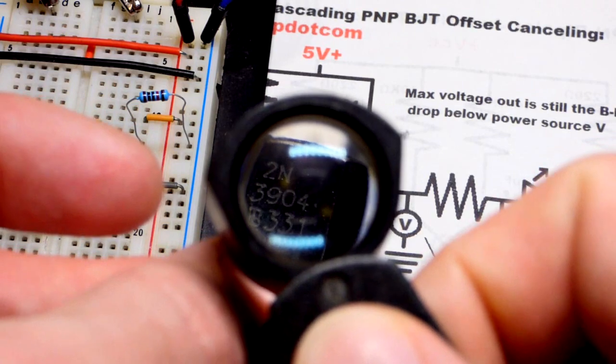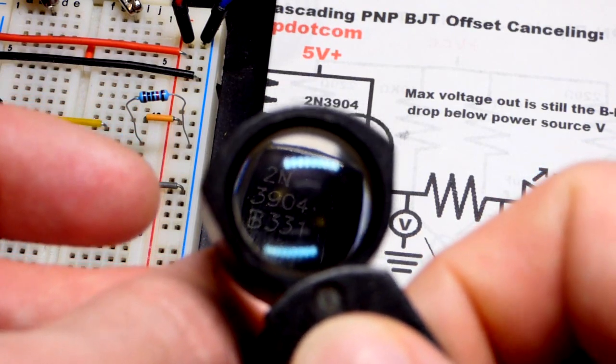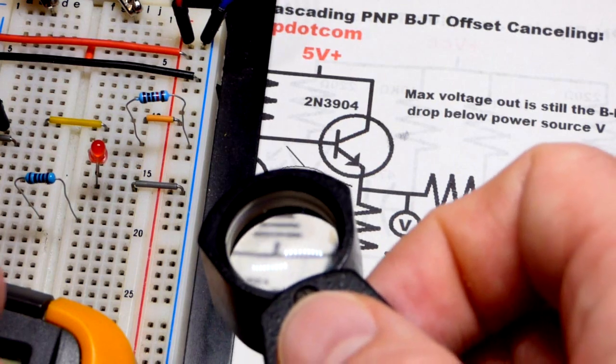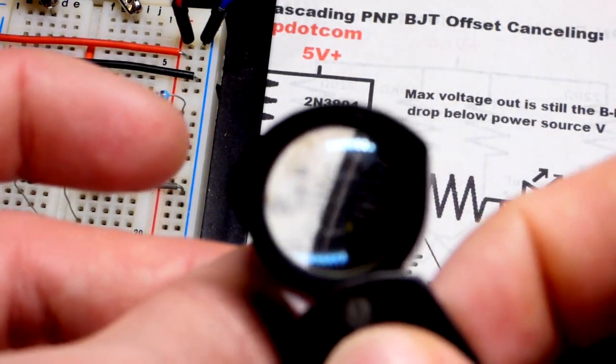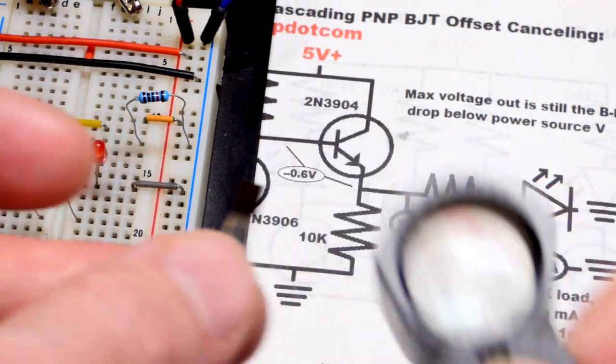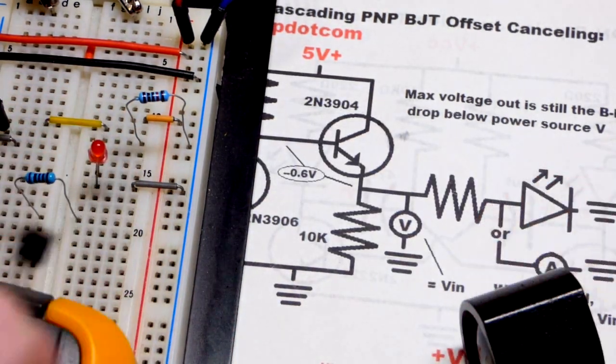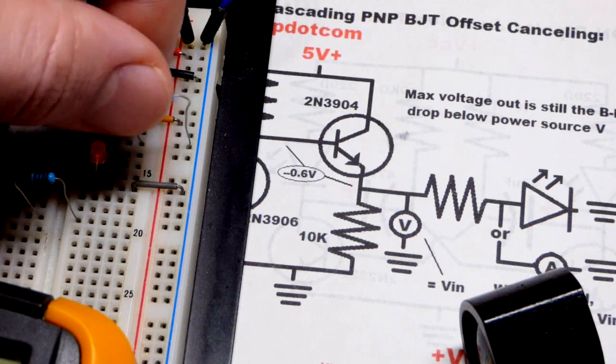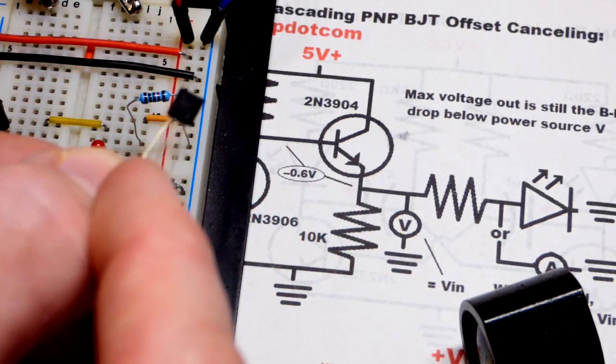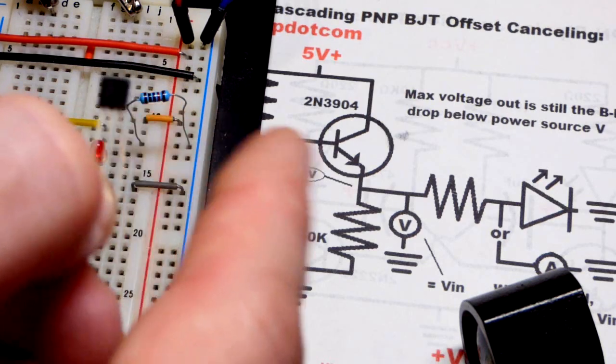And the other one we're using is the 2N3906. So this is an NPN type, that's a PNP type. But otherwise they have the same basic electrical properties. They can handle the same voltage, current, power, and whatnot. And then we got the resistor here. So they also have the same pin layout. Flat side facing us, left pin is emitter, middle pin is base, right pin is collector.